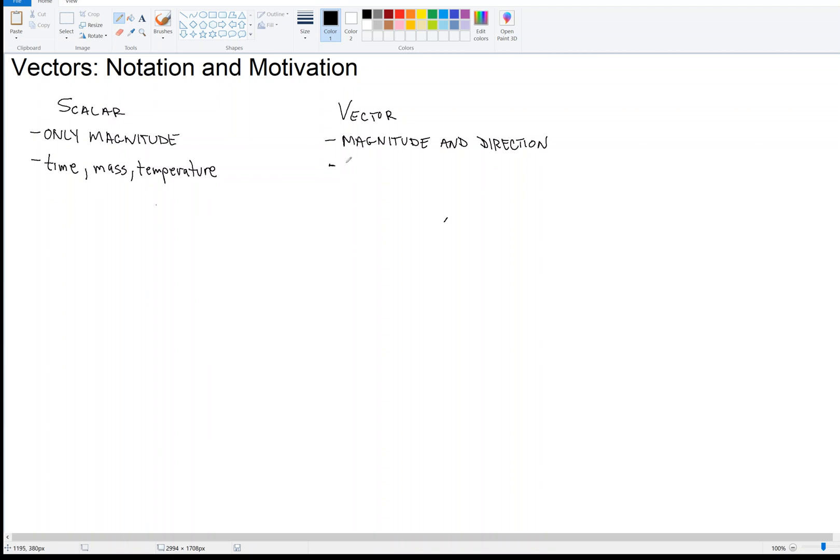So the classic example from physics would be a force. I have so many newtons in the positive x direction, or the north direction, or something like that. But displacement is also a vector. I've walked three meters north, or three blocks north, or something like that. Displacement. Acceleration is another example. The acceleration due to gravity is 9.8 meters per second squared down, towards the center of the Earth. There are others, of course. These are just three examples of each.